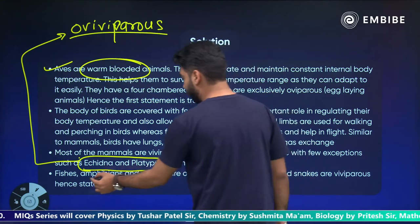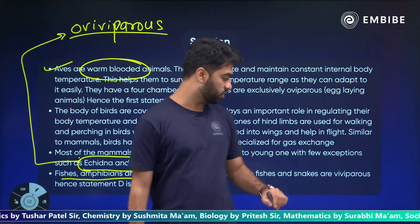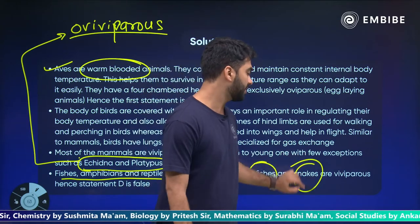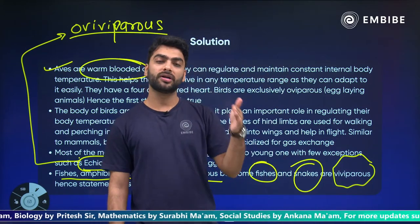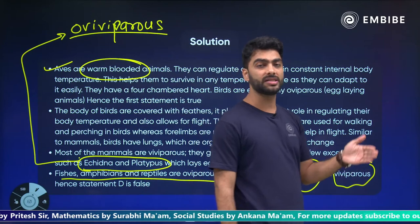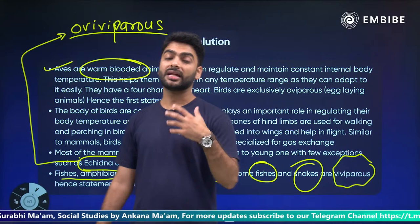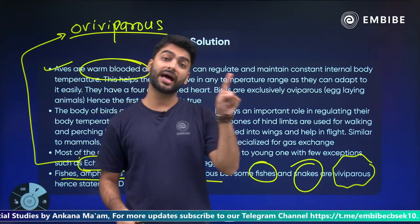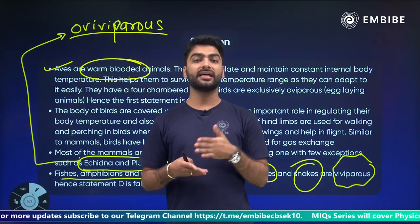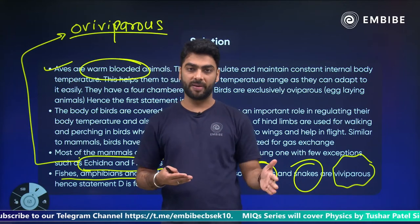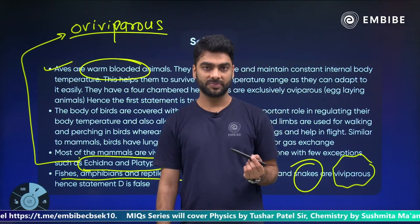Coming to the fourth point — fishes, amphibians and reptiles are oviparous. But there are some fishes and some snakes which are viviparous as well, and that is why option D becomes the false statement. There are certain snakes which give birth to direct young ones and do not lay eggs — they are called viviparous, not oviparous. That makes D the false statement.